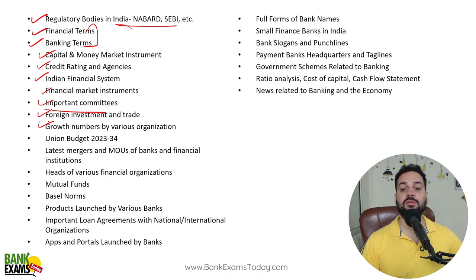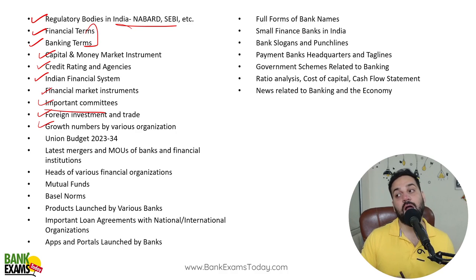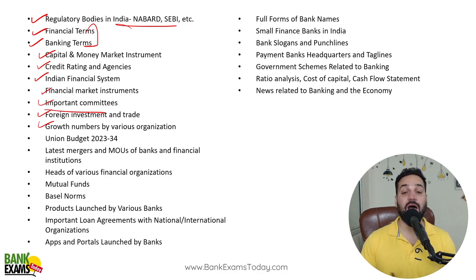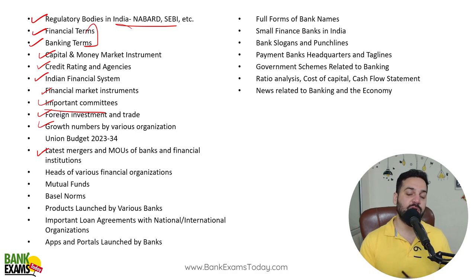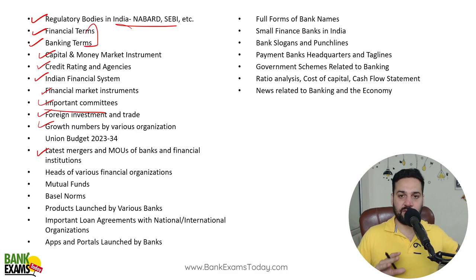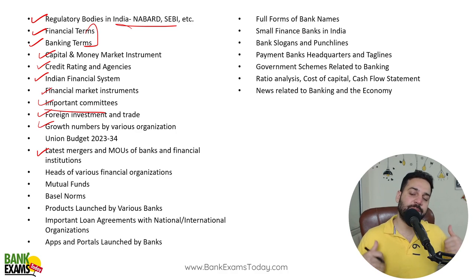Foreign investment and trades, growth numbers by various institutions — Indian institutions like NITI Aayog, RBI, and international ones like IMF and World Bank — are very very important. MOUs between Indian banks, Indian states, and international organizations — any MOU with an international organization that appears in the news comes in the paper many times. Please remember that.